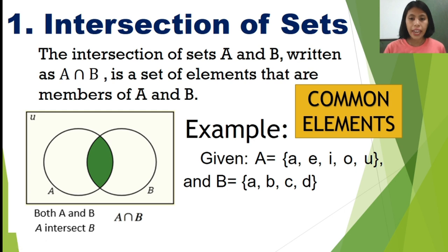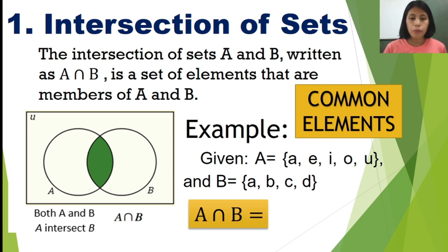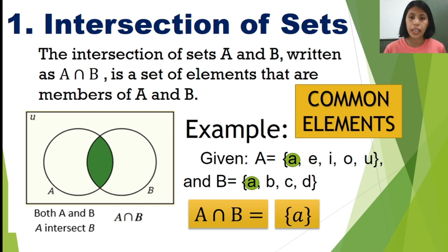Let's have an example. Given set A with elements E, A, I, O, and U, and set B with elements A, B, C, and D. For intersection of sets, we need to find the common element. Our common element is A. Therefore, the intersection of sets A and B is equal to {A}.